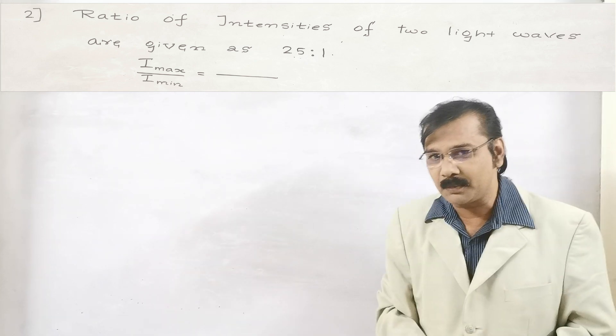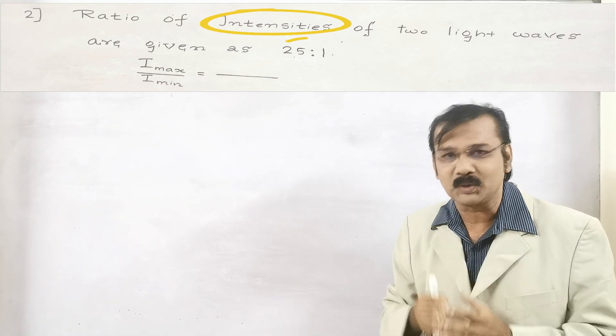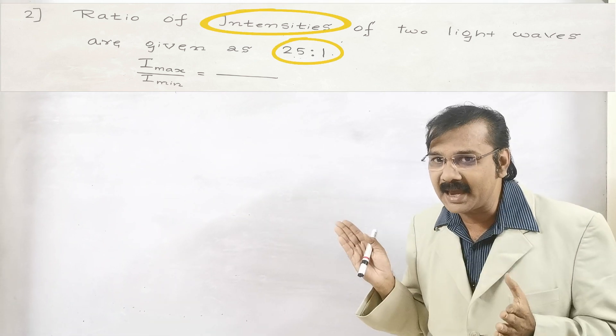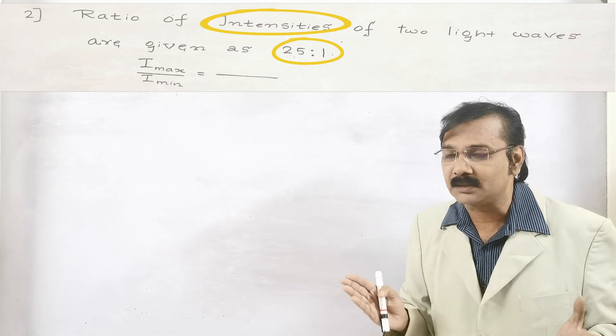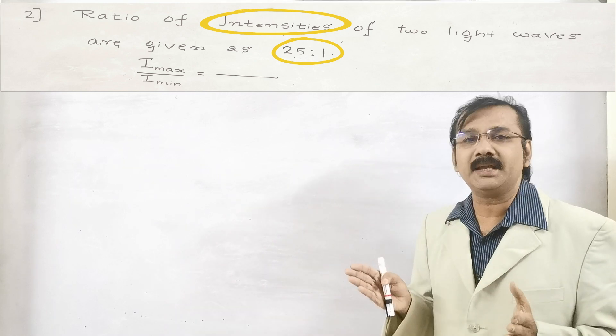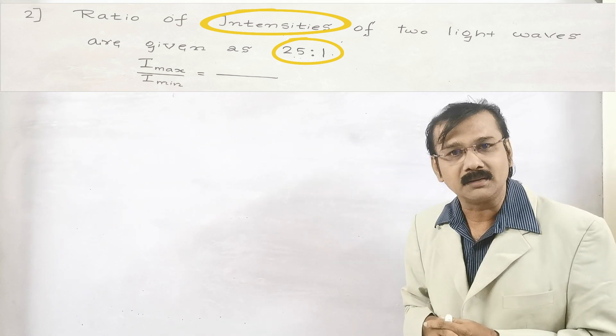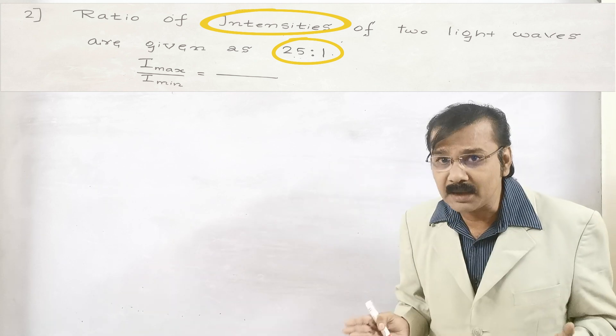What are the two important points you have to remember? The one is intensity. The other one is ratio. So I have encircled again the second question in a similar fashion. It is the intensity has been encircled and the second one is the ratio, that is 25 is to 1, and there are four options given.